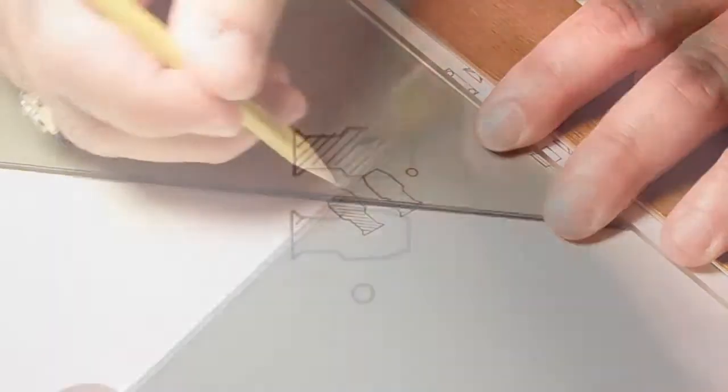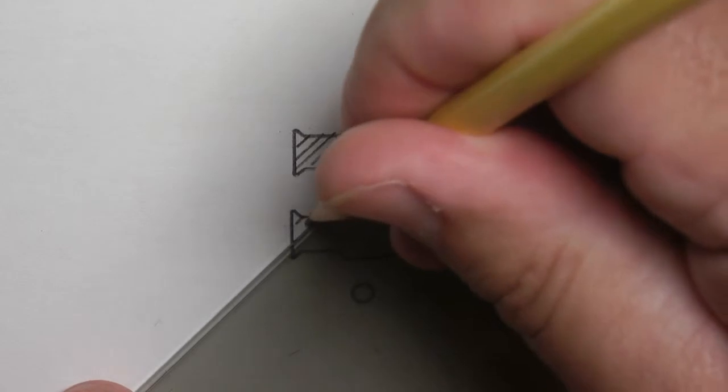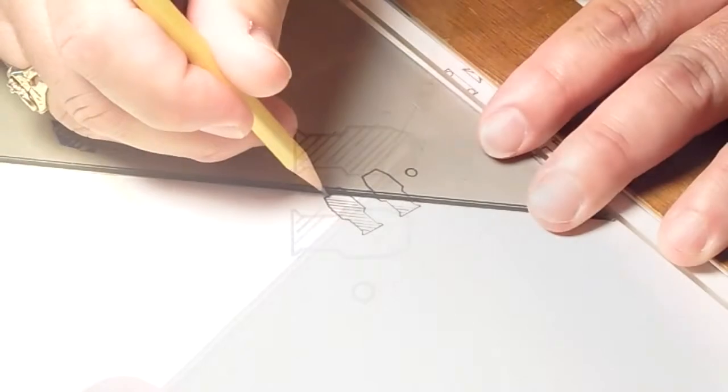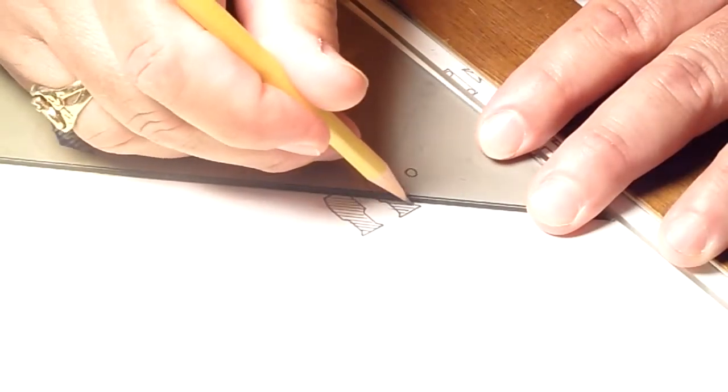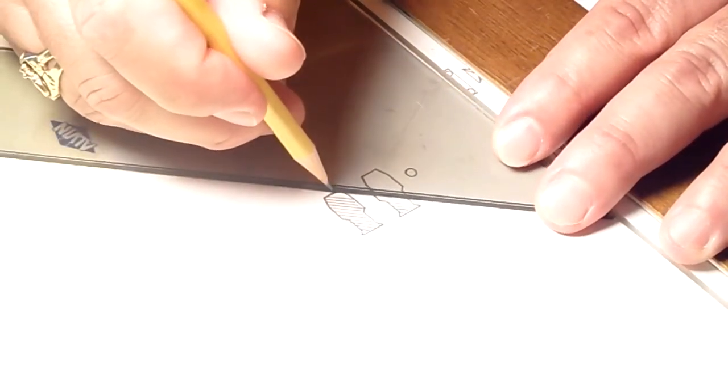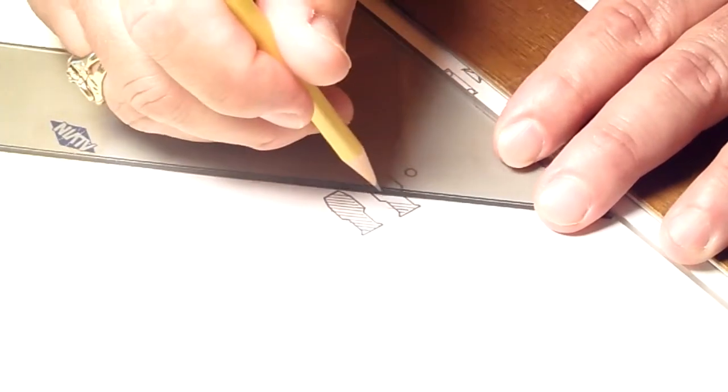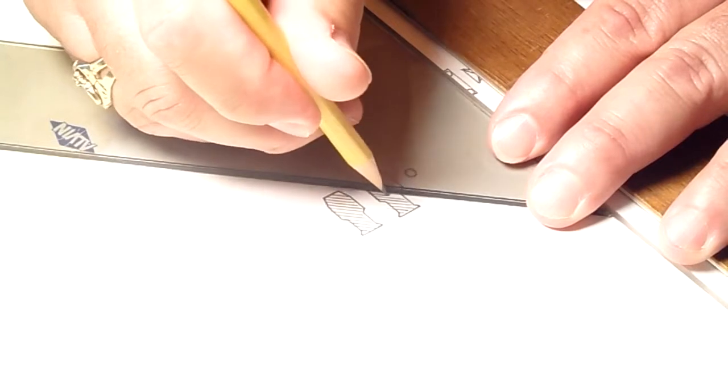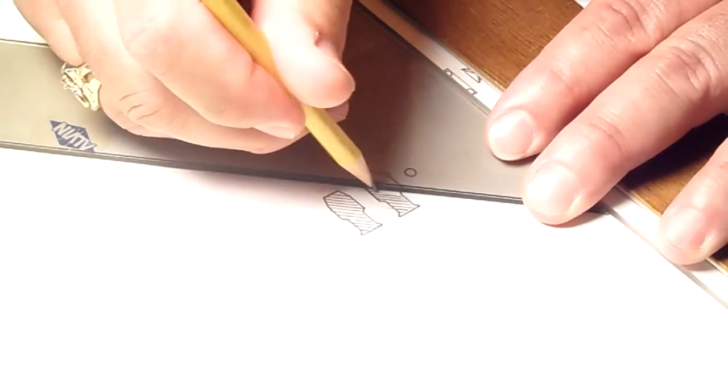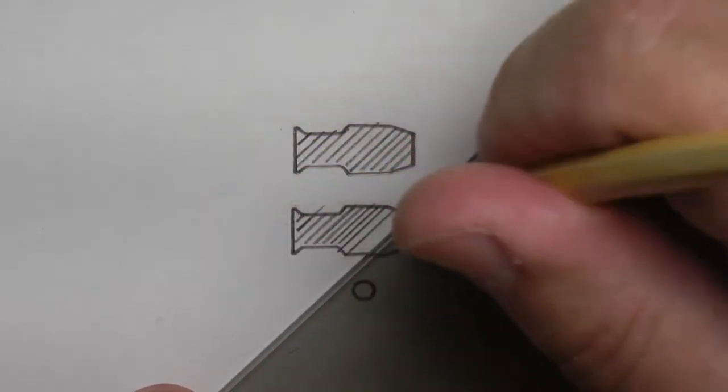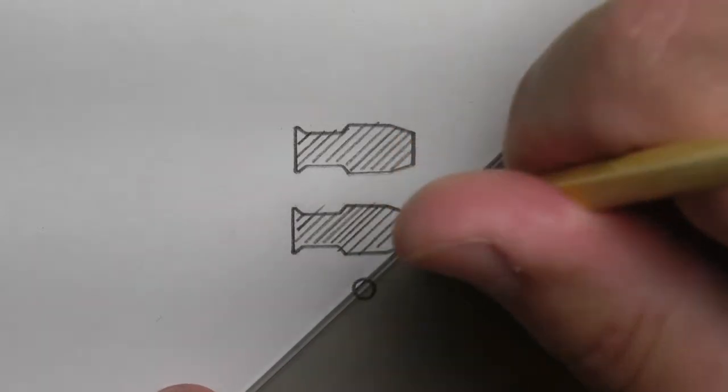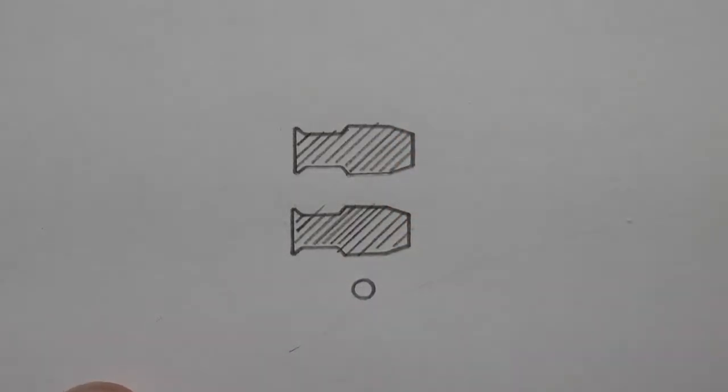Now notice I'm going to use the same, just use the triangle on both units here. Start turning my pencil, keep that line nice and sharp. There we go, there are my two units.